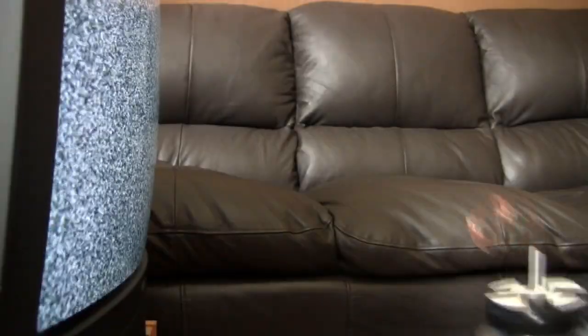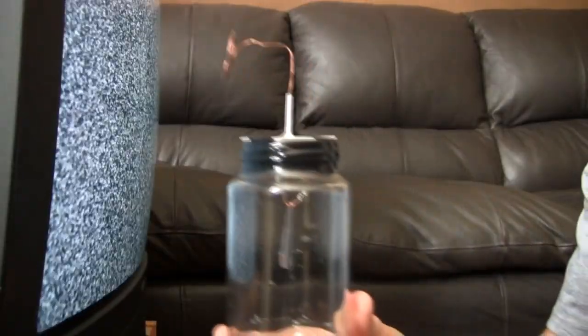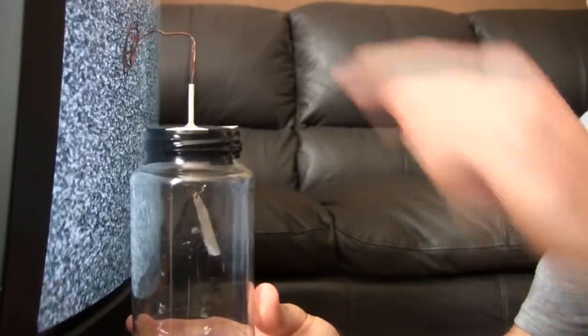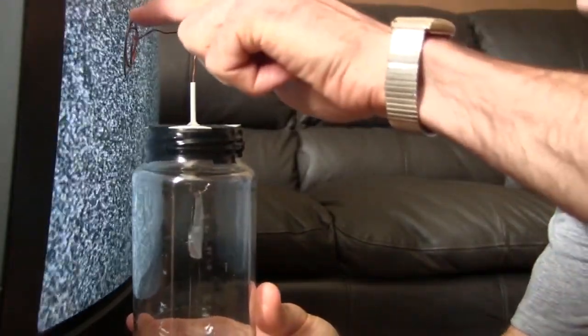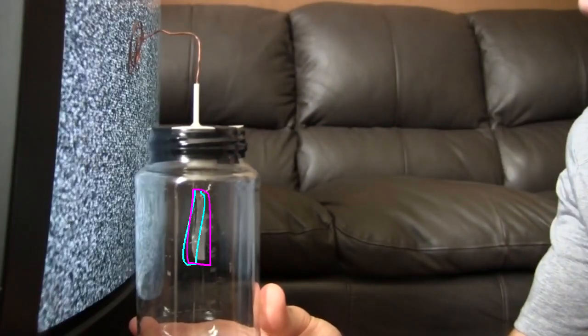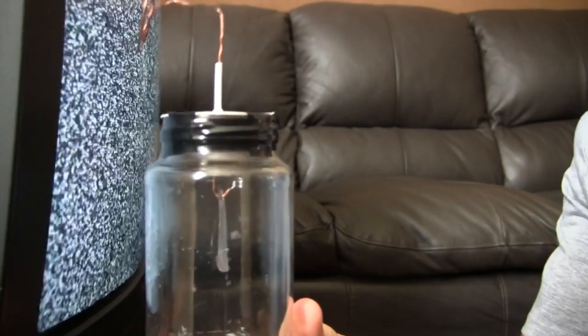The first thing you need to do is bring the terminal of the electroscope near the charged object. Notice that the electroscope leaves separate. While still holding it near the charged object, touch the terminal with your finger and then take your finger away. Notice that the leaves come back together. Now move the electroscope away.